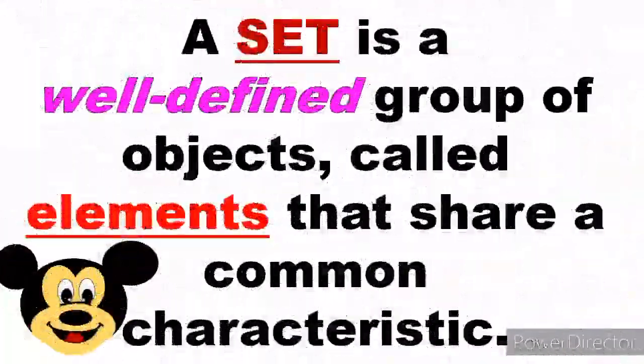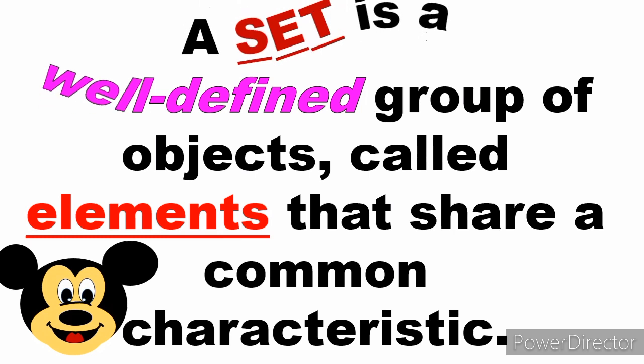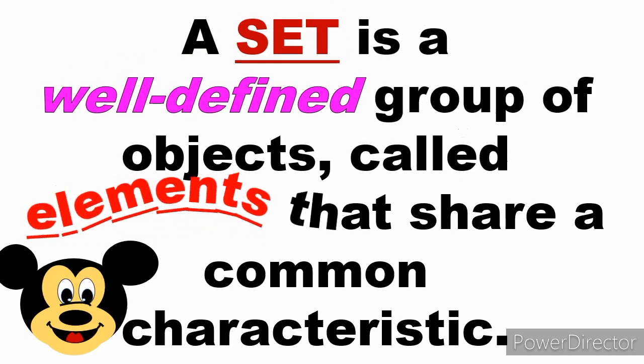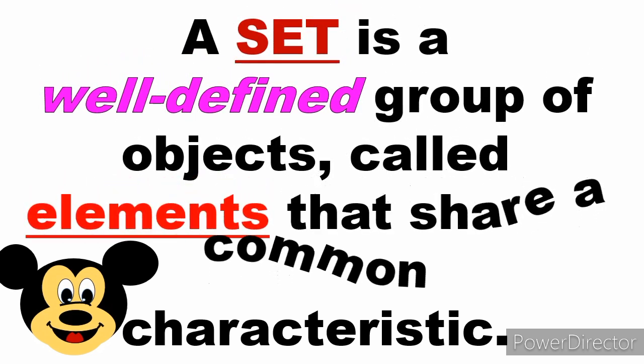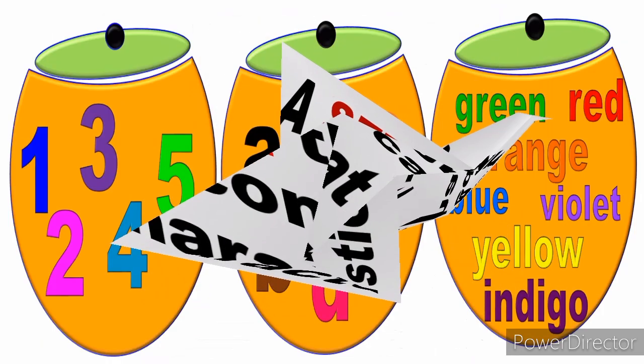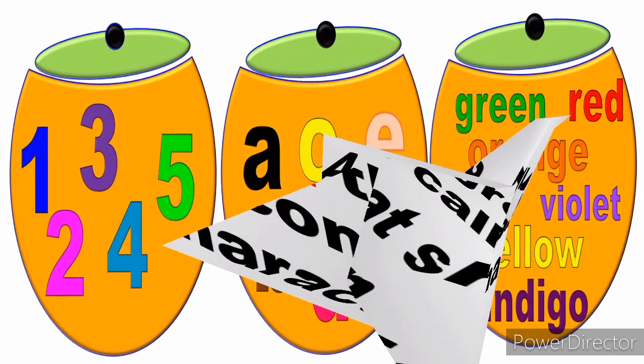Now you know how to identify a well-defined set — the objects must have a common characteristic among all elements. A set is a well-defined group of objects called elements that share a common characteristic.